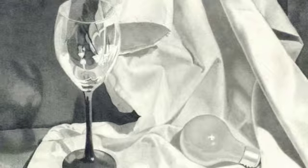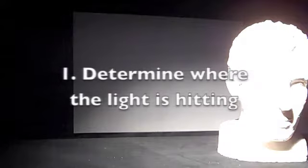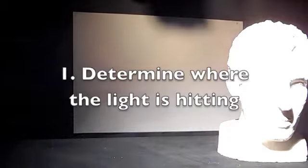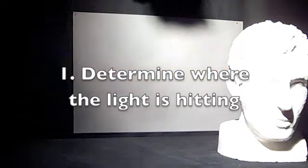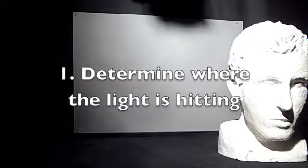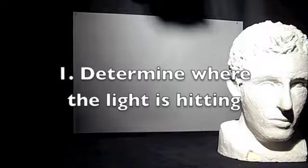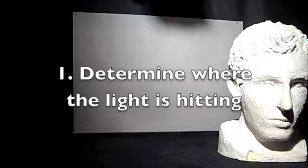A simple change of direction in the lighting can change the entire look of a person or a drawing subject. So here are some tips about working with lighting in art. Number one: determine where the light is hitting. The outline of the shape will still be there, but it will definitely have the highest value.